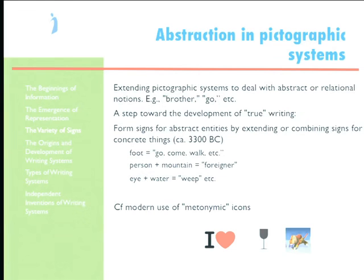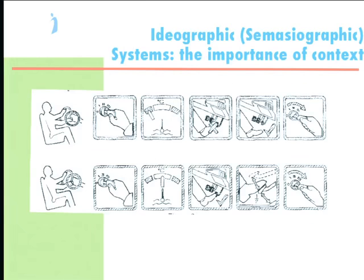Here's one example of a modern — let's call these semasiographic systems, as a lot of people do — systems in which the signs represent ideas directly, and in this case iconically. This is from a car, obviously. It was designed to be interpretable to people in our society, even without language knowledge.